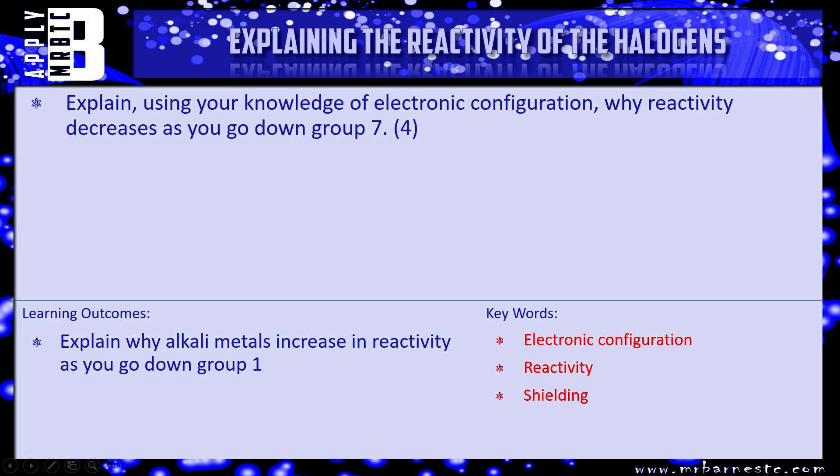Let's see what the examiners can ask. I've got a four-mark question for you, which is bringing together everything we've just talked about. It says: explain, using your knowledge of electronic configuration, why reactivity decreases as you go down group seven. Four marks — you need to say four things. Think through what we just talked about in this video, about the number of shells, about the force of attraction, get it down onto paper and we'll see how you've done in a minute.